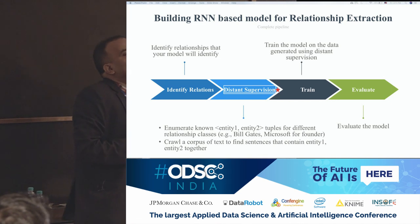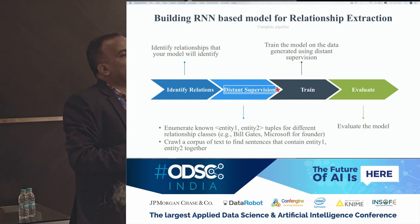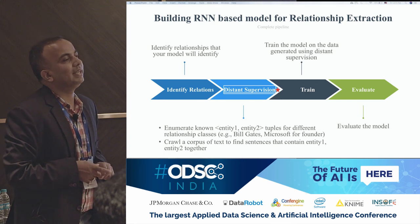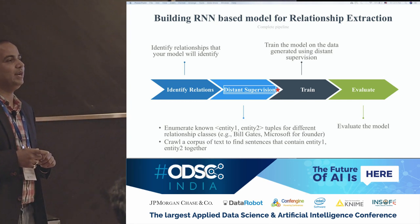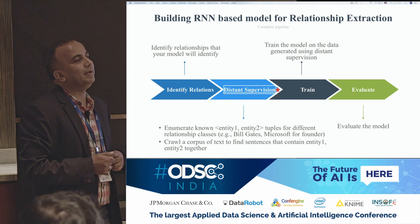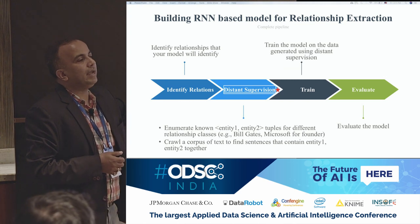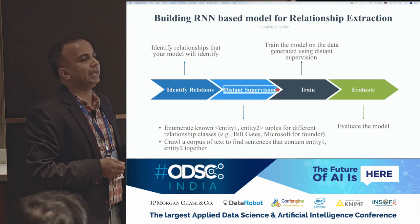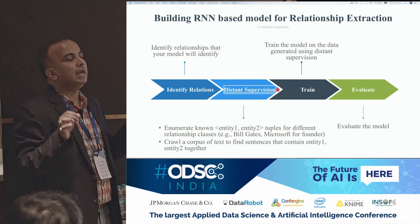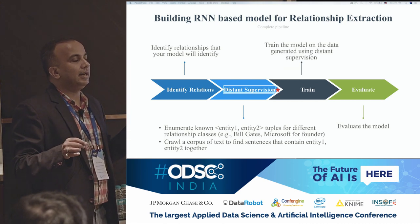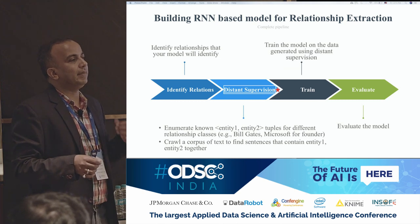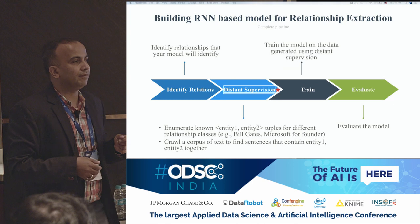For testing, you'll have to go and manually label data to evaluate the model. You can simplify this using the distant supervision technique — if Microsoft and Bill Gates are related by the 'founder' relationship, then every sentence that contains both Microsoft and Bill Gates can be labeled as the 'founder' relationship.